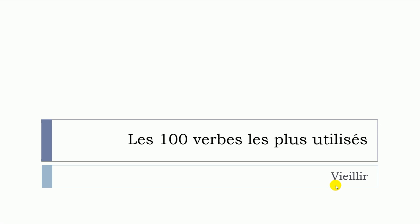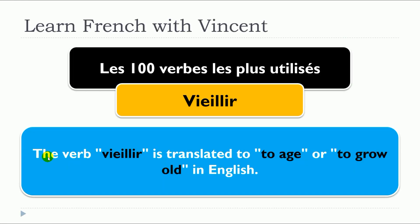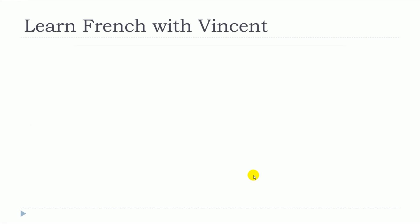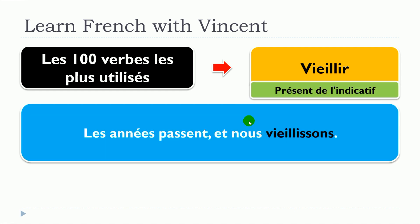In this lesson, we will see together the verb vieillir. The verb vieillir is translated to 'to age' or 'to grow old' in English. We will see a few examples with vieillir in présent de l'indicatif. Les années passent et nous vieillissons.